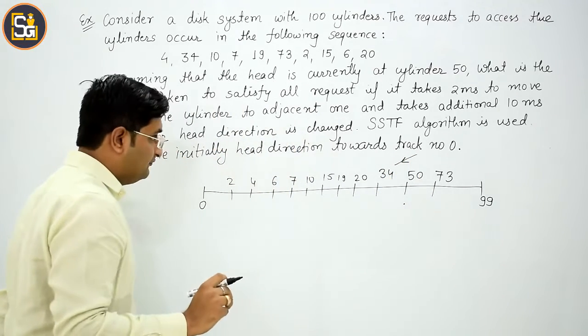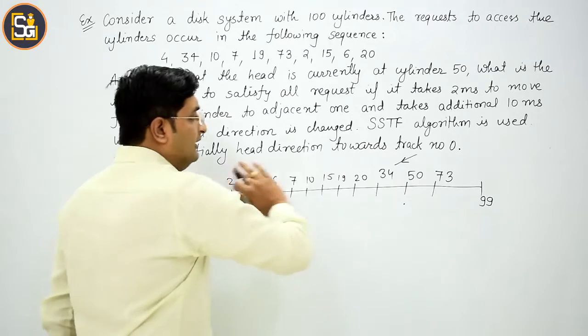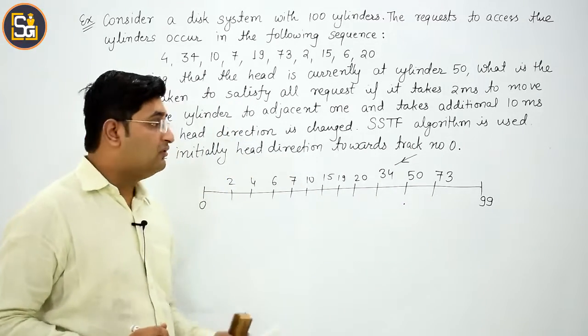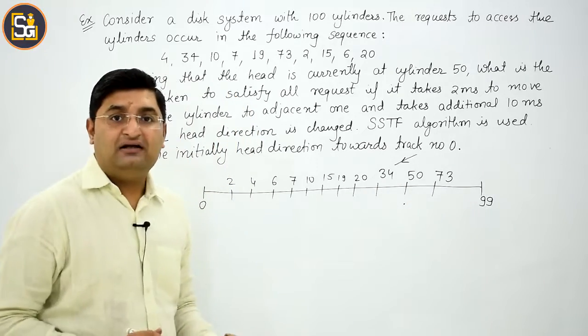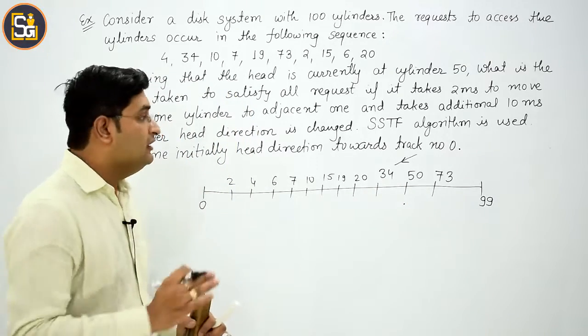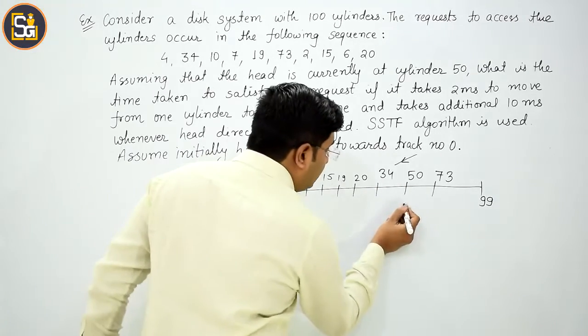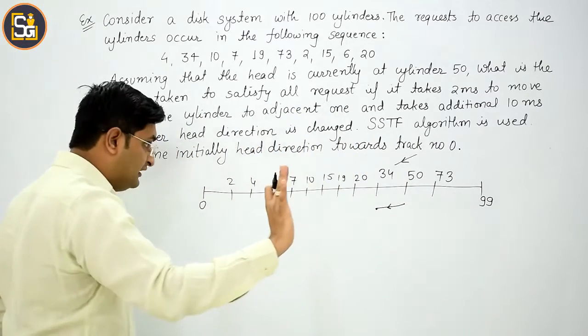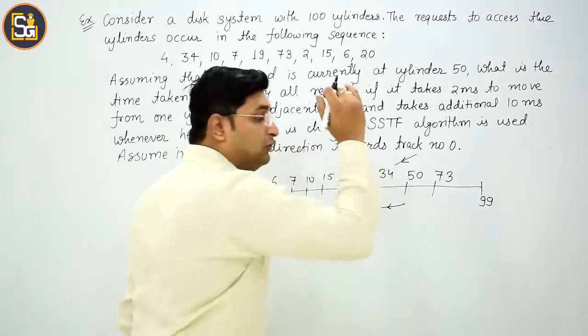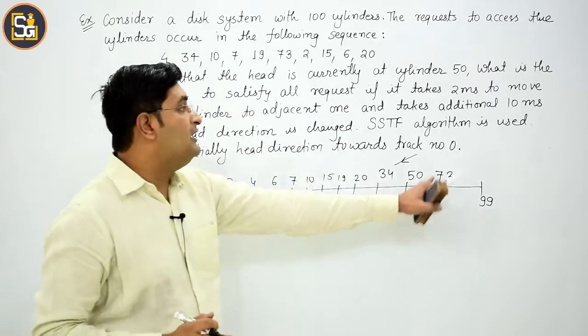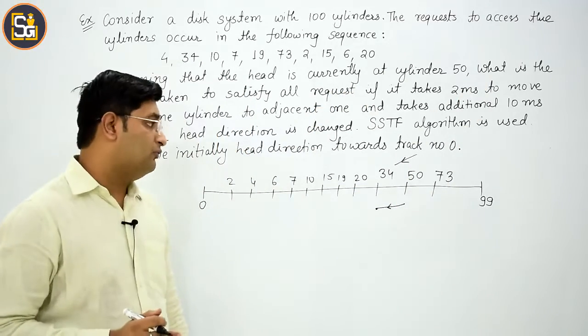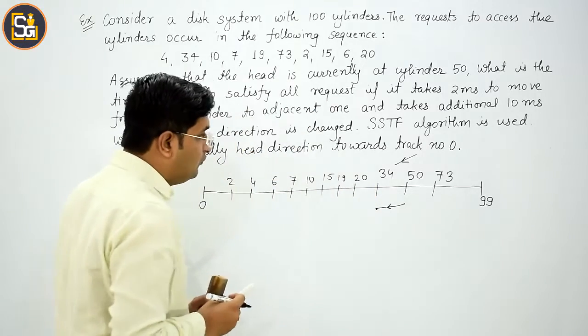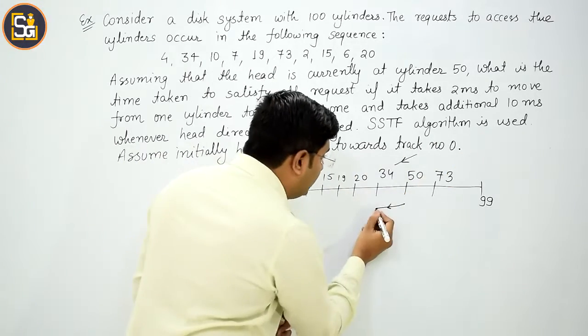Initially head is at 50 and the direction is towards 0. This request is 50 to 34, which is 16, and 50 to 73 is 23. So I need to move towards 34, meaning the direction doesn't change. If it had changed initially, I would need to add 10 milliseconds there. Clear? Now 34 to 20, that is 14.